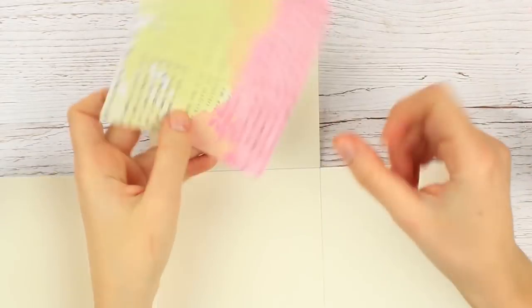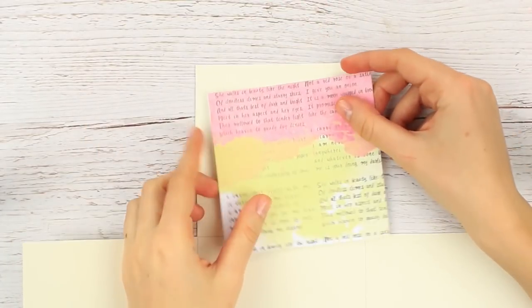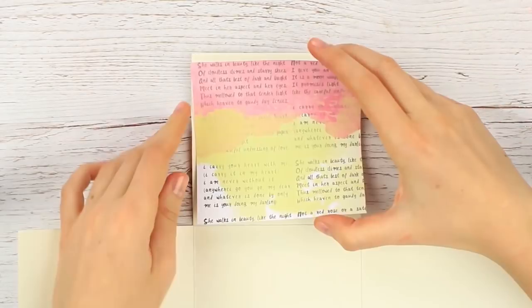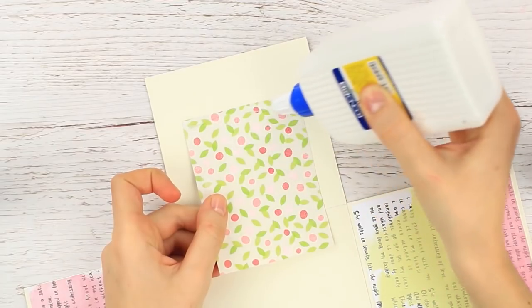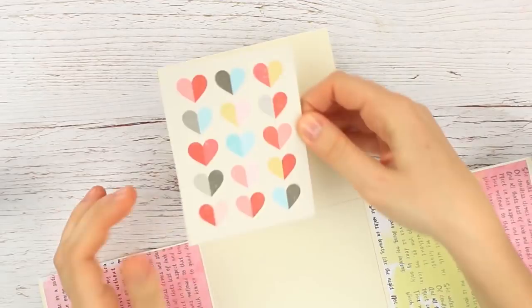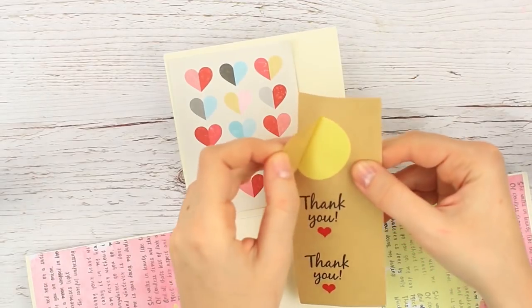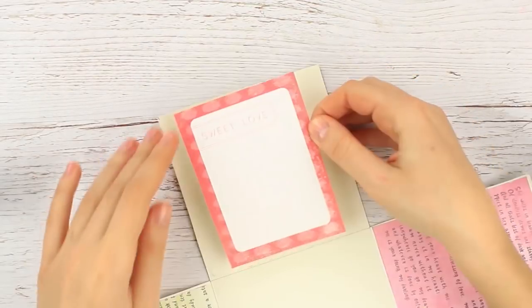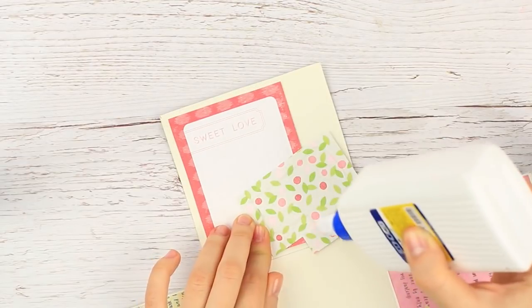Now we'll decorate the middle layer of the exploding box. Choose the patterned paper of the appropriate size. Attach to each wall. It can be color or scrapbook paper bought at the store, photos or DIY printed paper. Take the material you like.